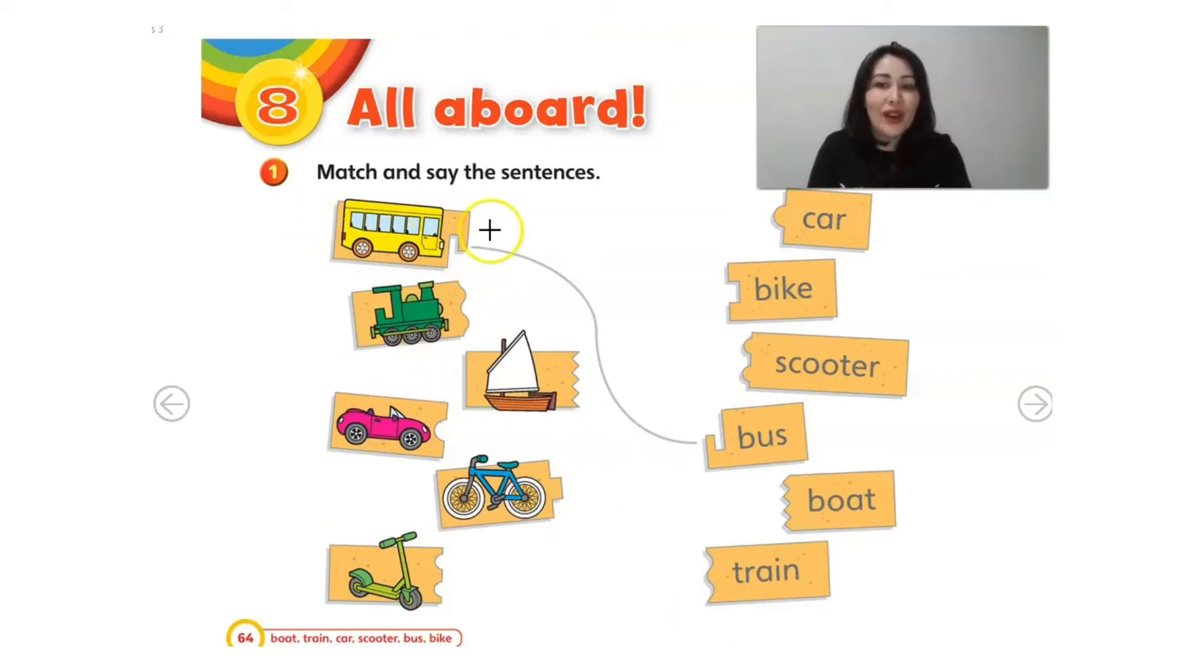So, here we have a bus. Where is the word? Look. Bus. Look at this part. It connects to the other part. It's the same. So, here we have the word bus. Now, you are going to connect the other pictures to the other words.